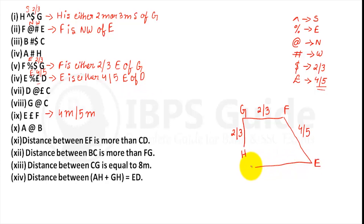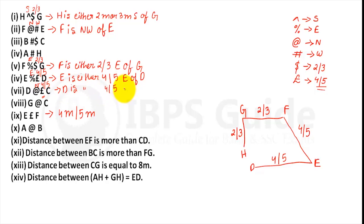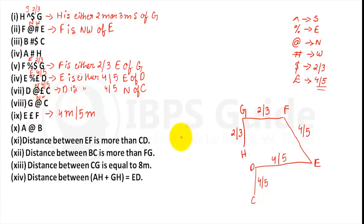Seventh point: D is either 4 or 5 meters north of C. Eighth point: G at-the-rate C — 'at-the-rate' means north, so G is north of C. So C is to the north of D — wait, D is north of C, and G is also north of C. Distance between D and C is 4 or 5 meters.